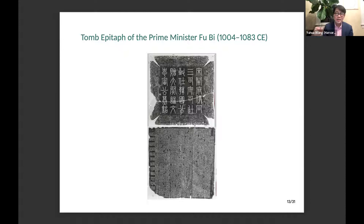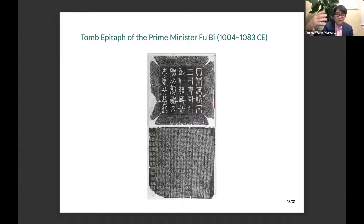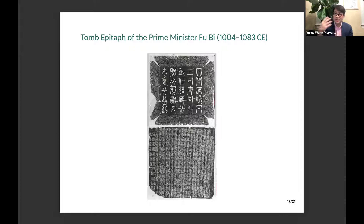On the front side of the tombstone is the name and position of the deceased person. For example, this is the tombstone of Fu Bi, who was an equivalent prime minister in the Northern Song dynasty in the early 11th century. On the back side of the tombstone, they carved a Muzhiming eulogy that a friend of Fu Bi wrote after he died — documenting all the achievements Fu Bi had accomplished in his whole life, carved onto the tombstone, which survived more than a thousand years.